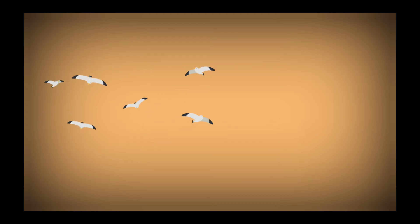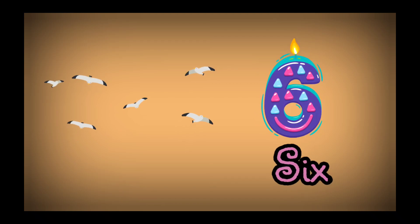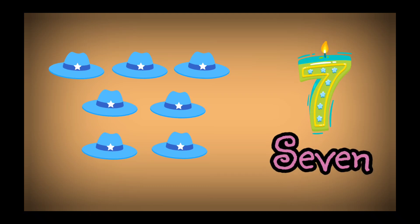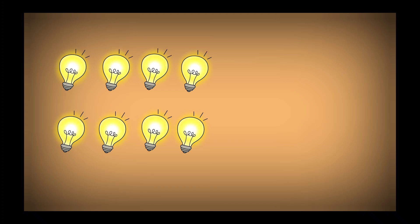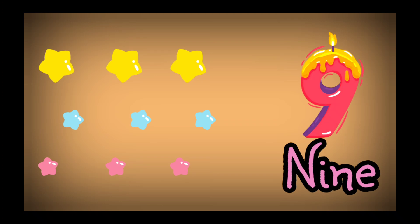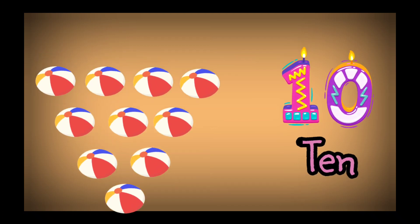How many birds are there? There are six birds. How many heads are there? There are seven heads. How many stars are there? There are nine stars. How many balls are there? There are ten balls.